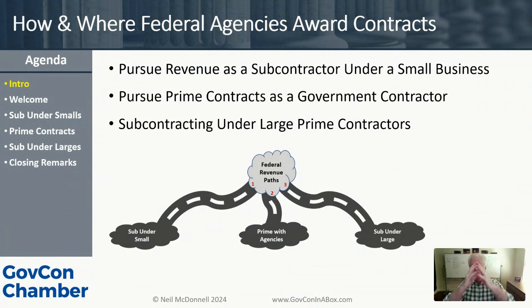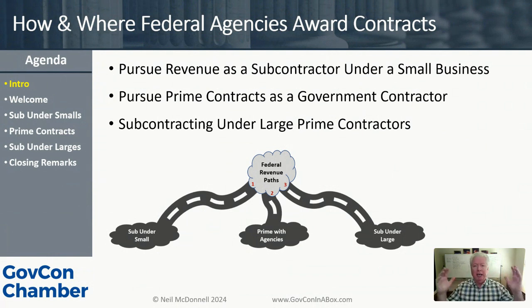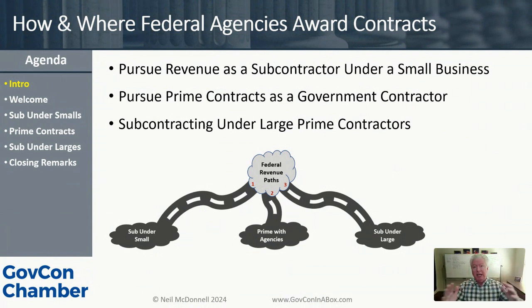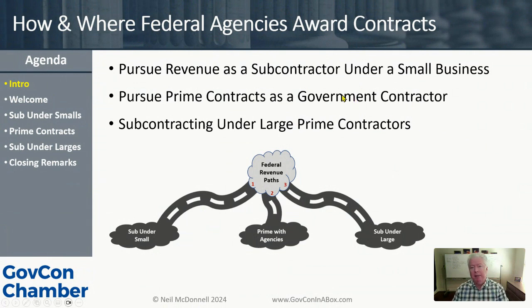The federal dollars are in one big pot, but the way that money comes out to industry is through three different paths. If you're only pursuing one path, you're only going after about 30% of the federal dollars. If you're brand new to government contracting — a year or less, or a million dollars or less — don't focus on large primes yet. Focus on the other ones. But at some point you'll be swimming in all three streams, and you should have a strategic plan for 2025 on how to get revenue from each.